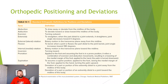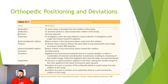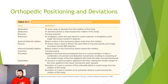Eversion is turning outward and inversion is turning inward. These are mainly used at the ankle joint. An inversion ankle sprain is the most common way to sprain your ankle. Eversion — you don't have a lot of motion at your ankle in that direction.